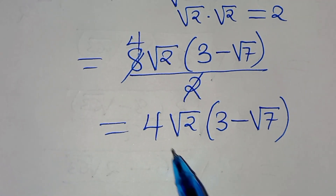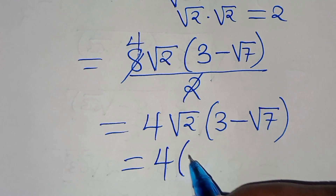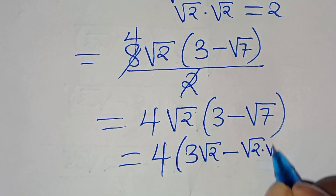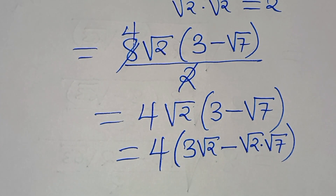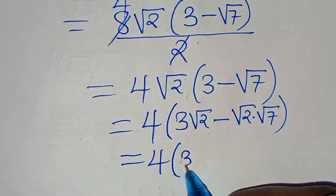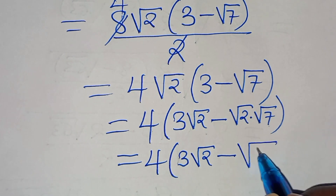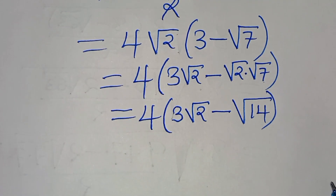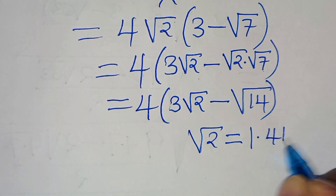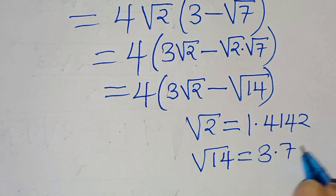The next step is to multiply square root of 2 with everything in the parentheses, so that we have 3 multiplied by square root of 2 minus square root of 2 times square root of 7. Therefore we have 4 into the parentheses: 3 multiplied by square root of 2, subtract square root of 14, since square root of 2 times square root of 7 equals square root of 14. Now square root of 2 equals 1.4142, and square root of 14 equals 3.7417.